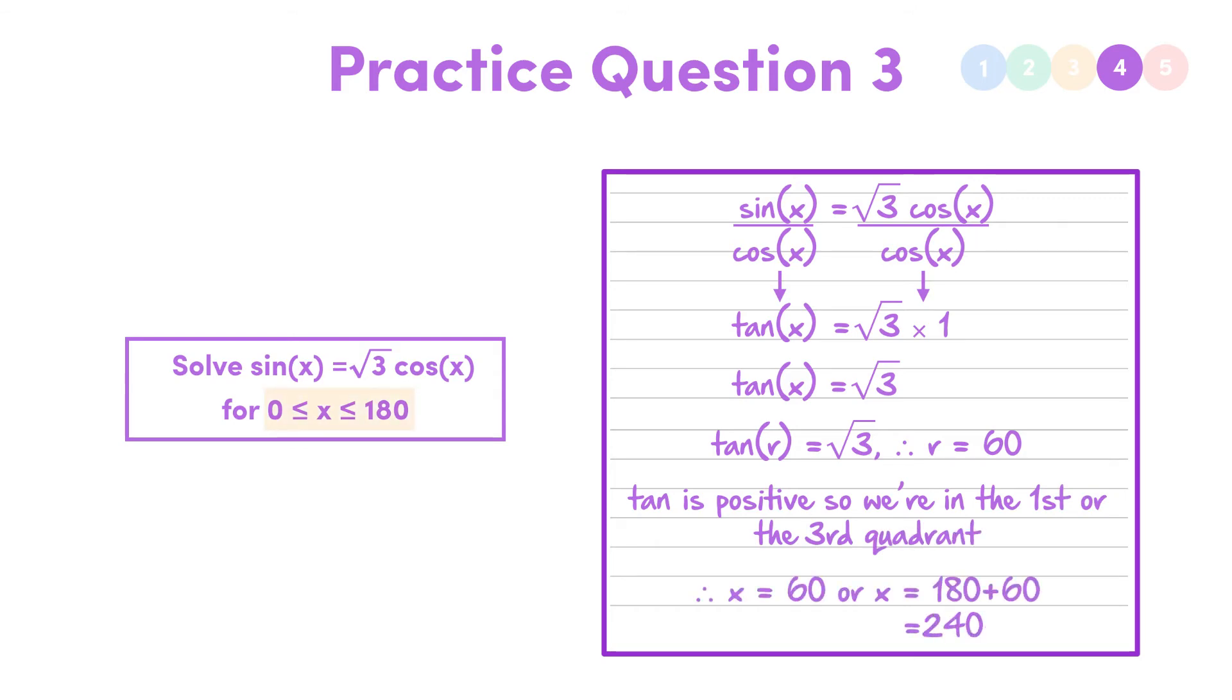But remember, our domain is for x only between 0 and 180, so that means our final answer is just x equals 60. So yeah, pretty sneaky.